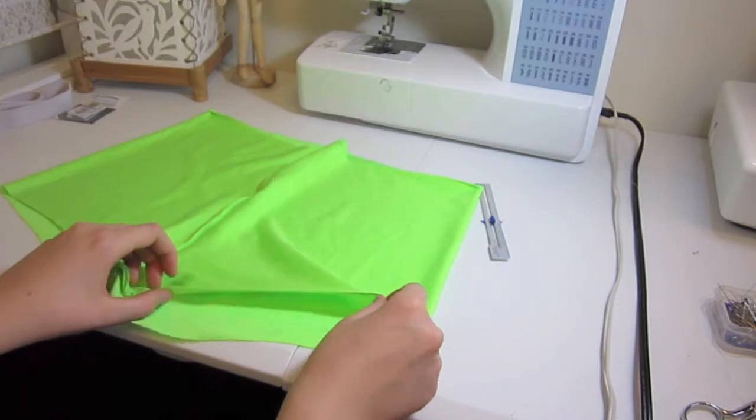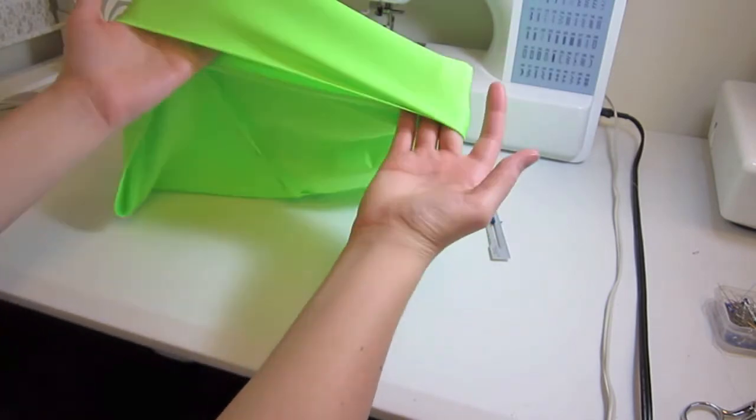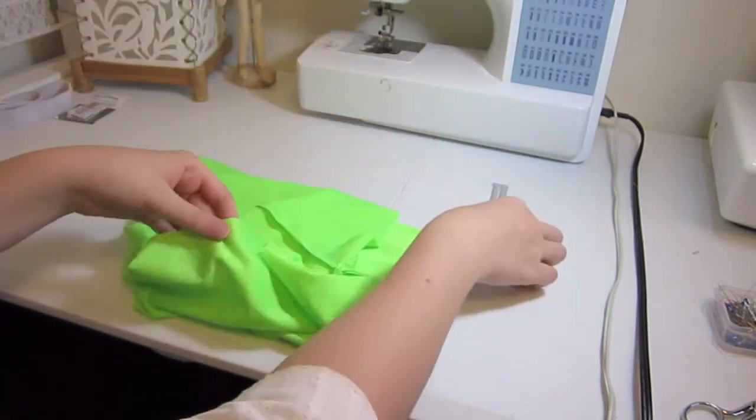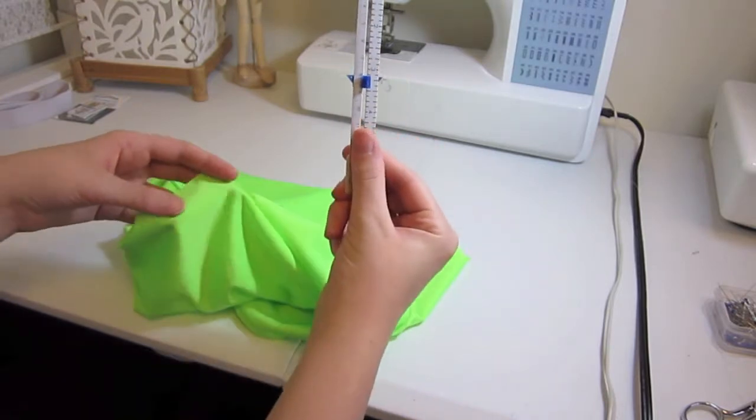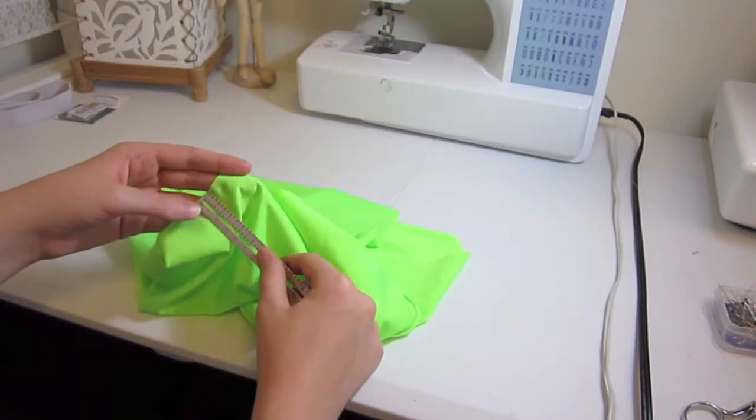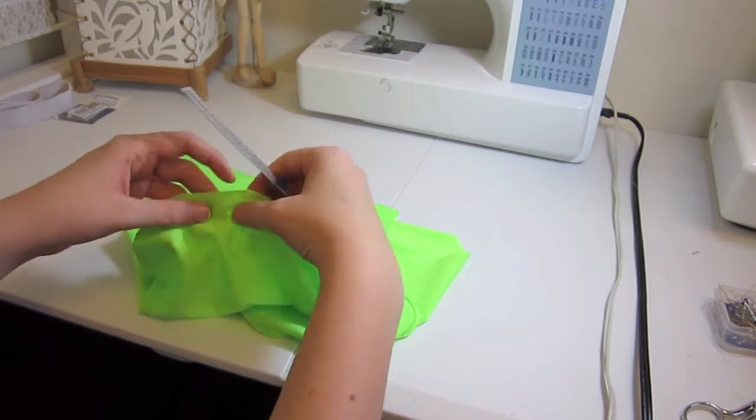And next what we're going to do is we're going to hem the bottom of them. And I'm just going to start by getting my seam gauge and measuring half an inch. I'm going to turn mine up half an inch.